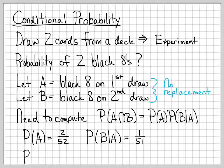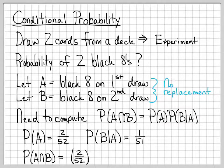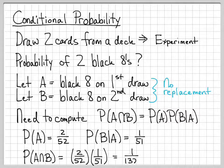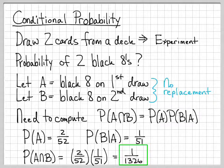So now we go ahead and plug these in. The probability that we are looking for, the probability of A intersect B, which is the probability of drawing two black eights out of a deck with no replacement, is 2 over 52 times 1 over 51, which is 1 over 1326. So this is an example specific to drawing cards from a deck without replacement of how we can use conditional probability to compute various things of interest.